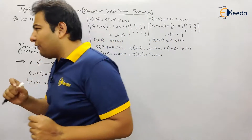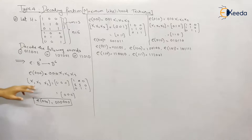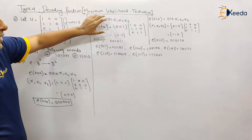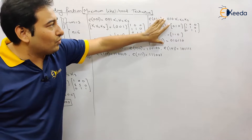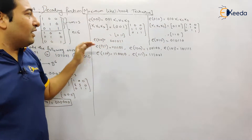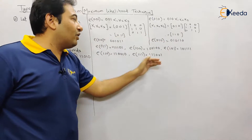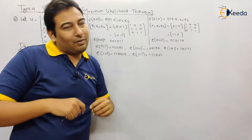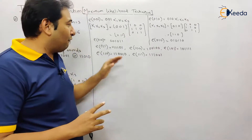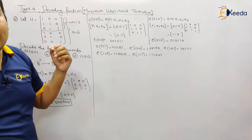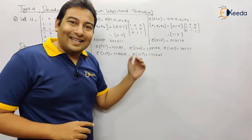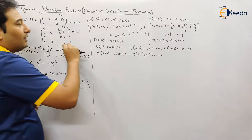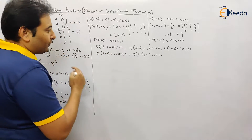First, let us find e000, then e001, e010, and so on. You need to find out all the encoding functions in a similar way. It is a bit of hectic work, but you have to do it. Please solve in detail and verify your answers. Now done with the encoding function, let us focus on decoding.